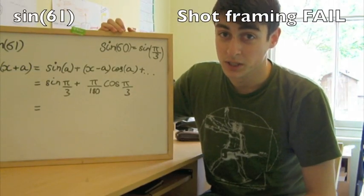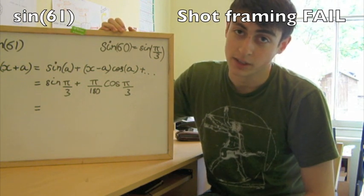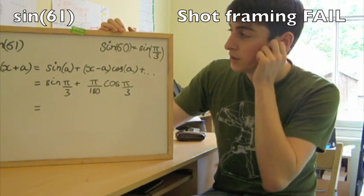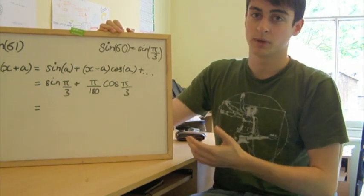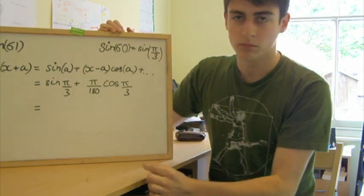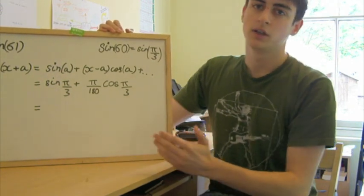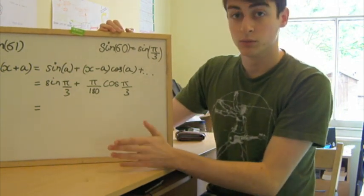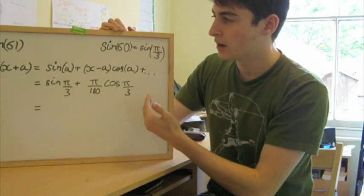The last question they asked me in this interview was to establish sin 61 without using a calculator. Now, it kind of screams straight away Taylor expansion because Taylor expansion is all about taking knowledge at one point and saying, well, if we know the gradient and then the curvature. The more terms you have, the more accurate your approximation gets. Which is exactly what I've done here. I've just expanded it out.